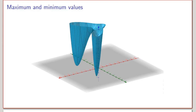So now we can ask whether we can do the same thing for functions of two variables. Here I have the graph of a function of two variables. The first question is to find the maxima and minima of the function, which requires defining what it means to be a maximum and minimum of a function of two variables. The second question is whether we can use partial derivatives to identify maxima and minima.